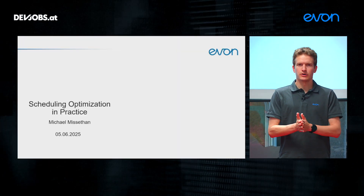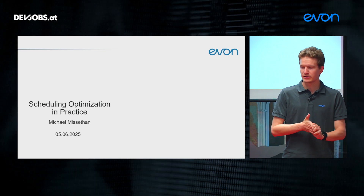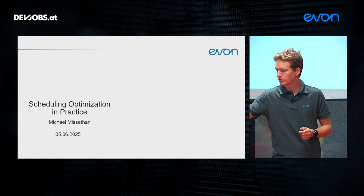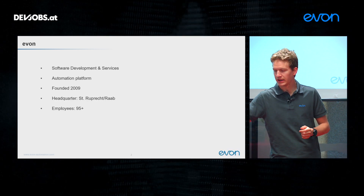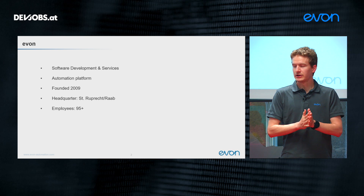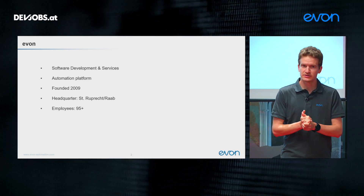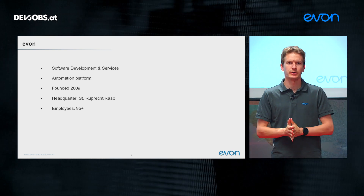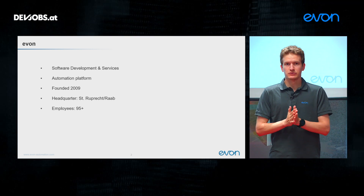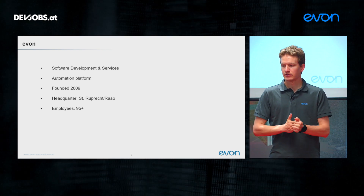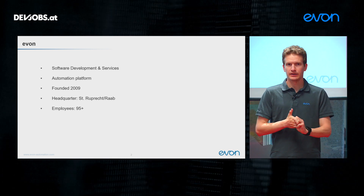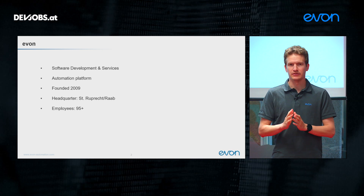Welcome to my talk on scheduling optimization in practice. Before I come to the actual topic, let me briefly introduce the company AVON and myself. AVON works in the field of software development and services. In particular, we are developing an automation platform called XAM Control. AVON was founded in 2009, with headquarters in Sankt Ruprecht an der Raab in the east of Graz, and has about 95 employees.